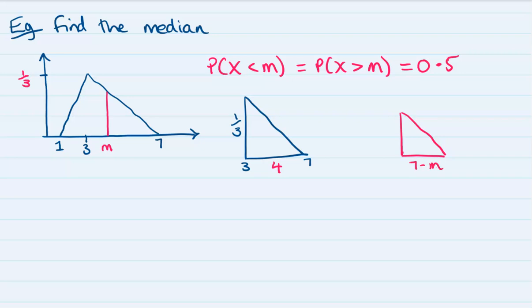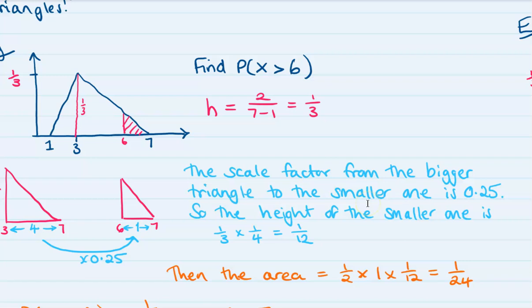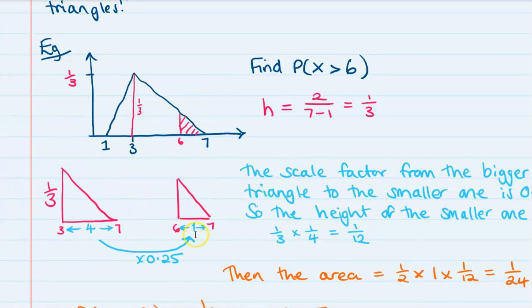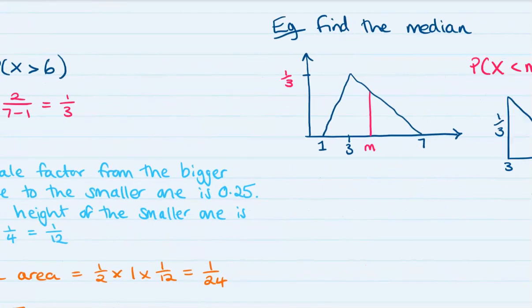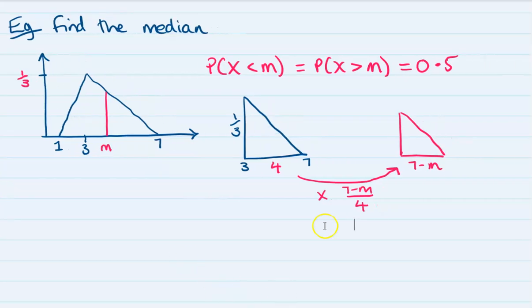In this particular case, our scale factor that we can work out for the height we don't have exactly, but we can use it to work through and find m. The scale factor here would be 7 minus m over 4. Your scale factor is always the thing that you're moving to divided by the thing that you're moving from. That's the same as we did on this other one over here. The scale factor here, the thing we're moving to was 1, the thing we're moving from is 4, so 1 divided by 4 makes 0.25.